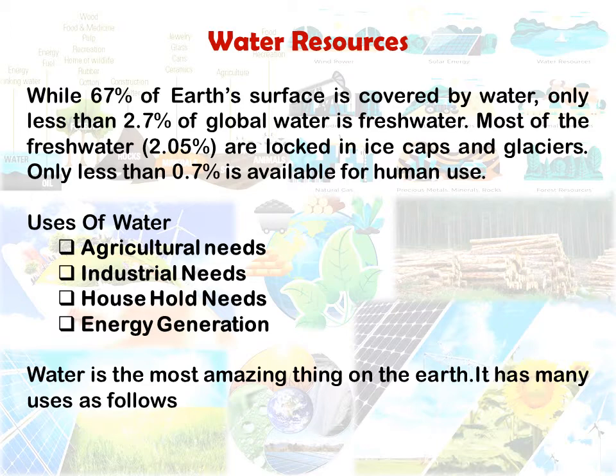Out of total global water, 2.7% is fresh water and 97% is salt water. Most fresh water — about 2.05% — is locked in ice caps and glaciers, so only 0.7% is available for human use. Agriculture cannot function without water.